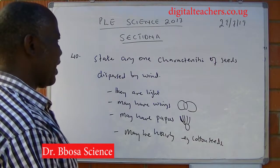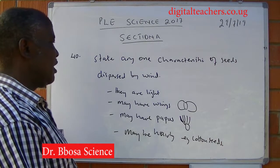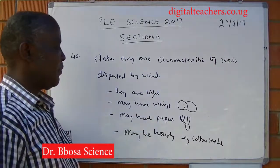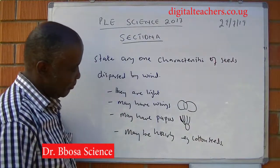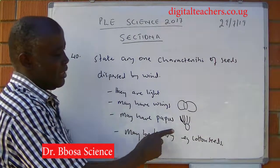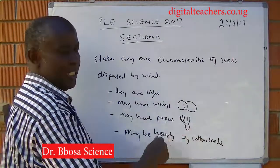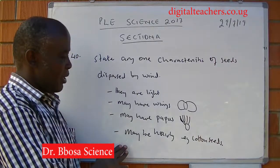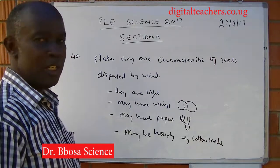State any one characteristic of seeds dispersed by wind. They are light. They may have wing extensions, for example, tecuma. They may have a tuft of hair, for example, the tradix seed — there is a strap of hair on the top. Or they may be hairy, like a cotton seed.